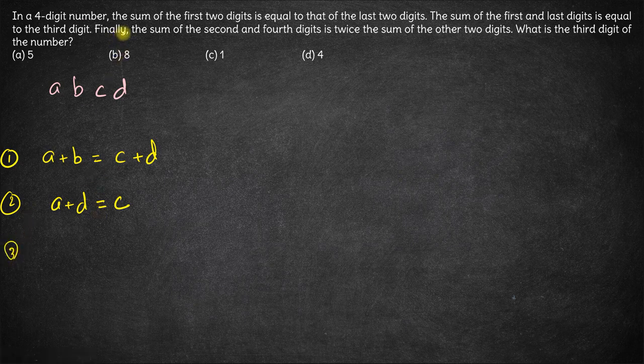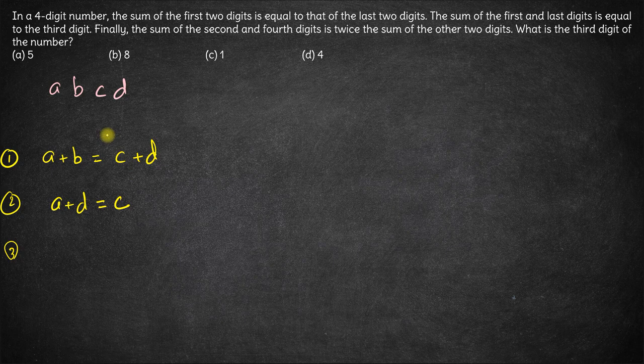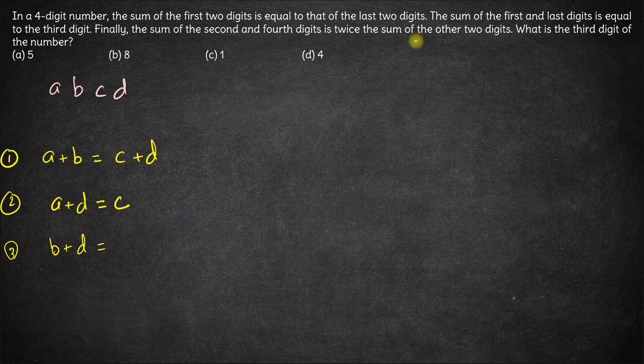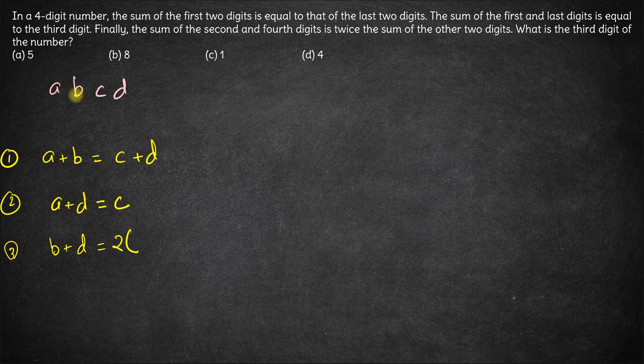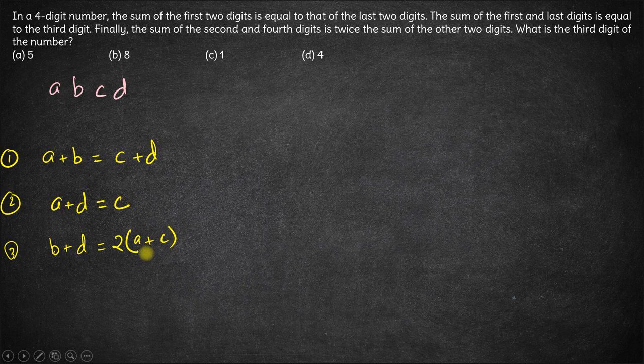And then we are also given finally the sum of second and fourth, B plus D, is twice the sum of the other two digits. This is equal to twice of sum of the other two digits which is A plus C. So this is what we have.